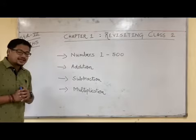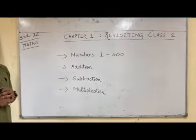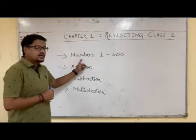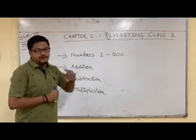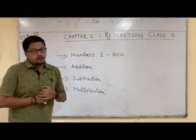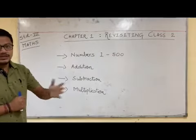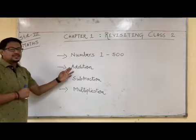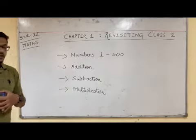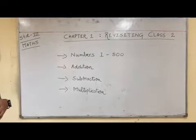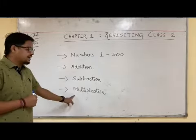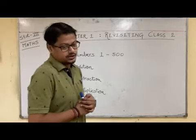The main things we have learnt in class 2 are numbers from 1 to 500. Many of you also know numbers from 1 to 1000, which is very good. Then in class 2 we studied about addition of 2 numbers, then subtraction, and finally multiplication.